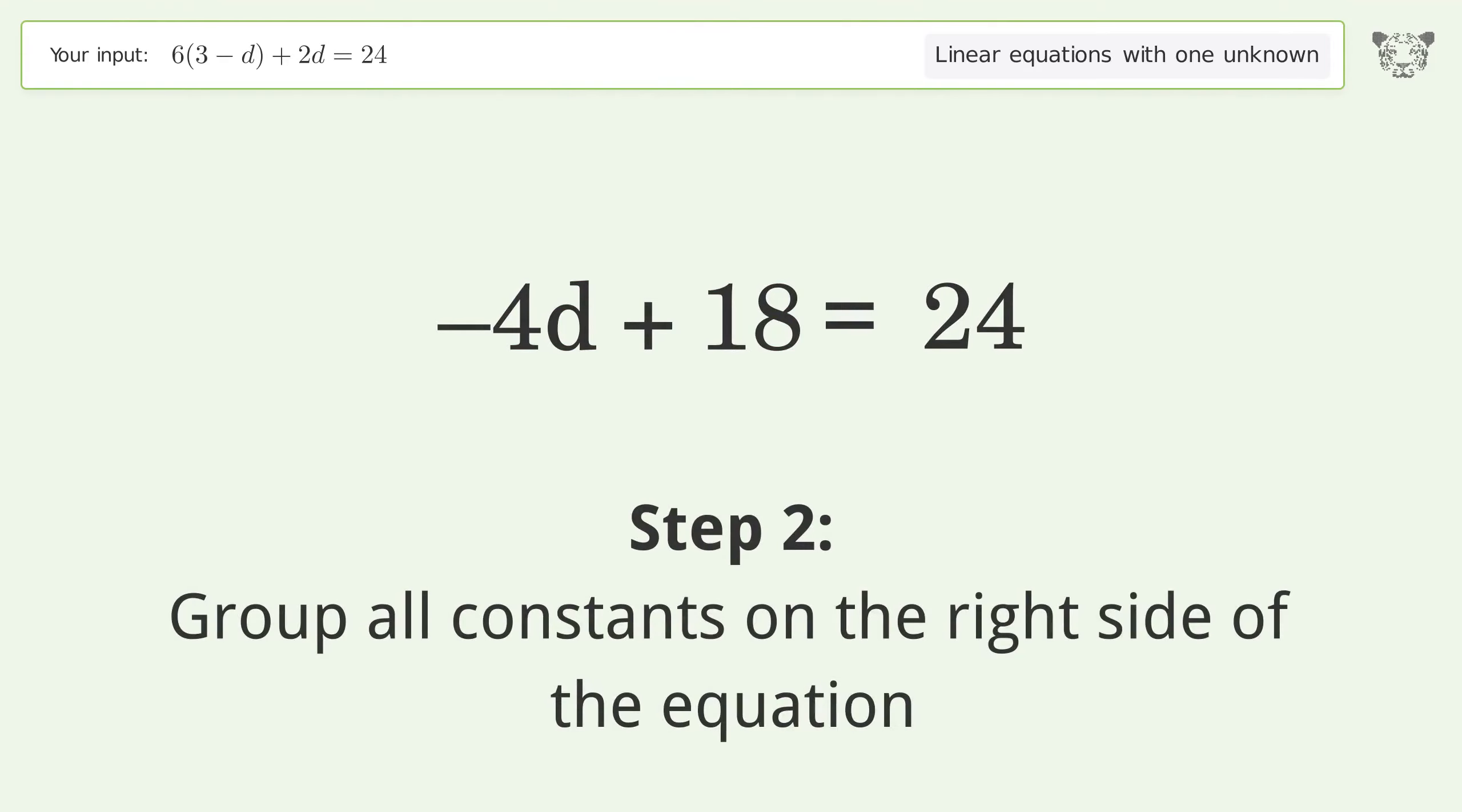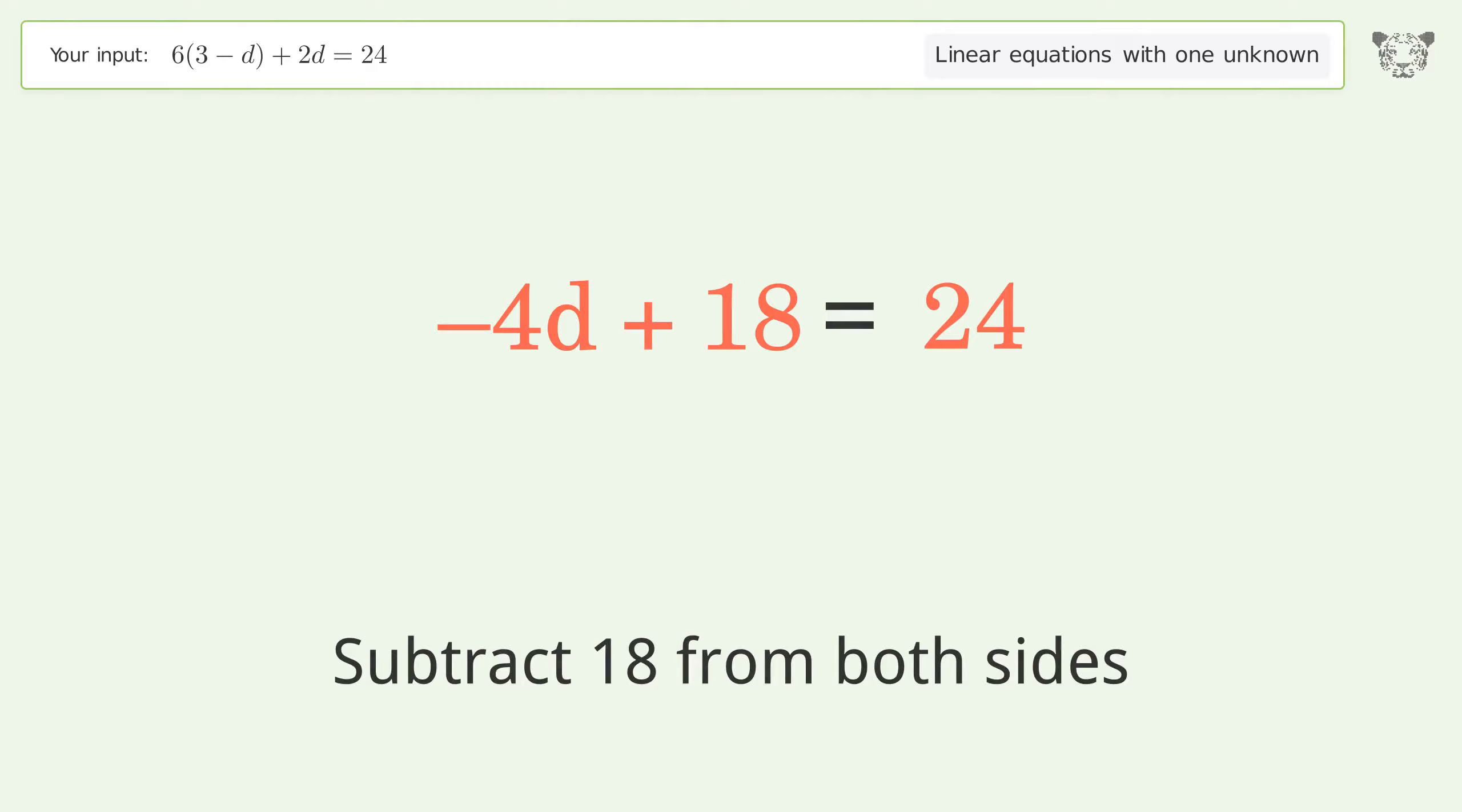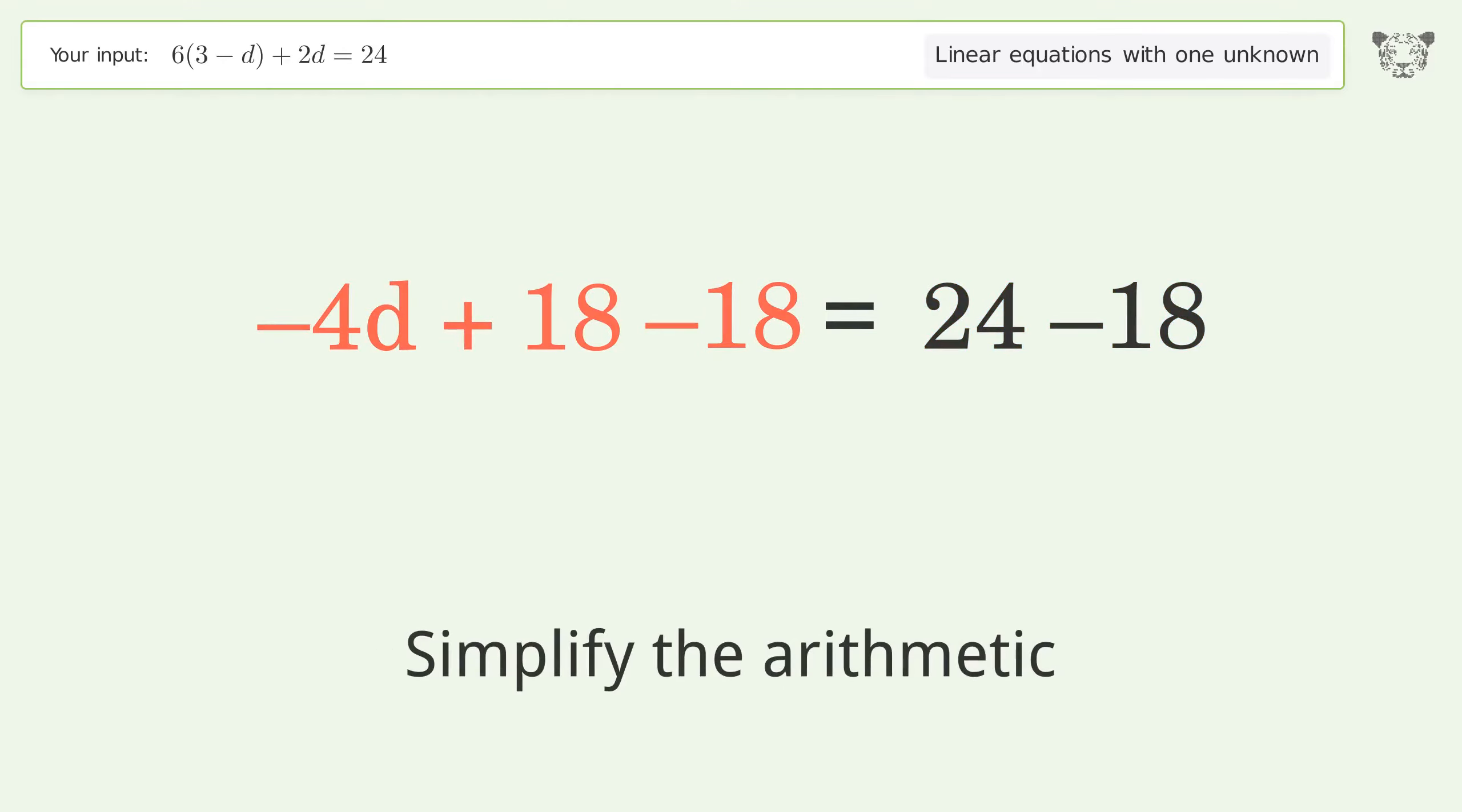Group all constants on the right side of the equation. Subtract 18 from both sides. Simplify the arithmetic.